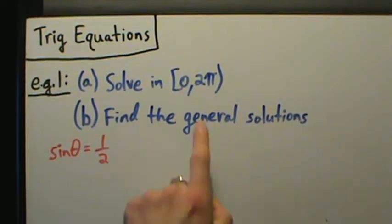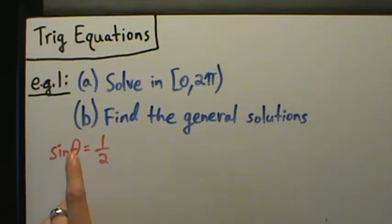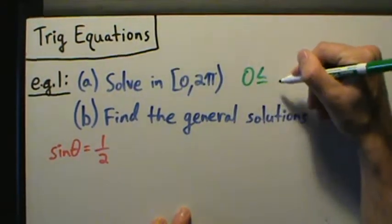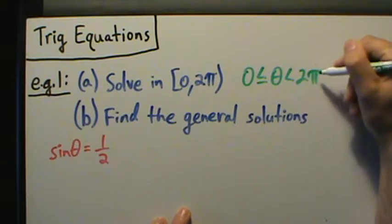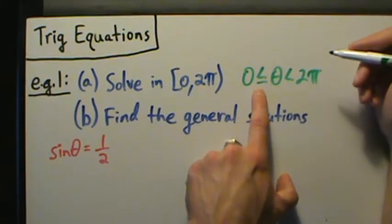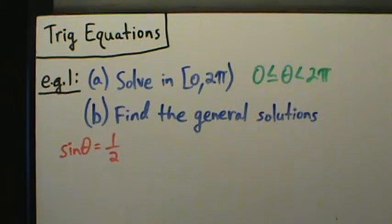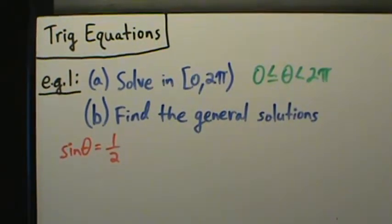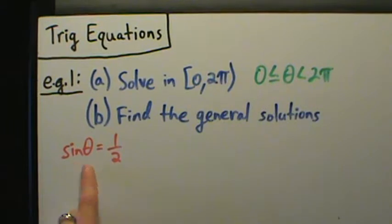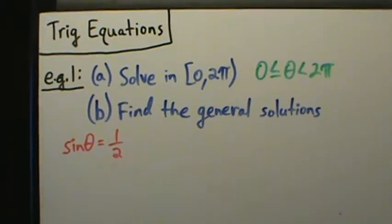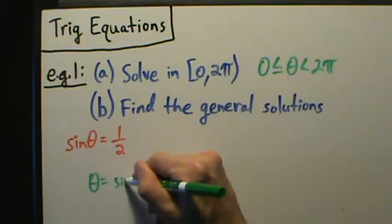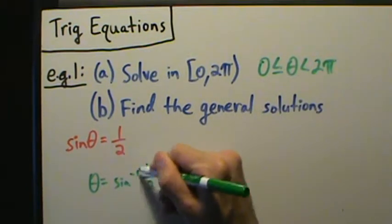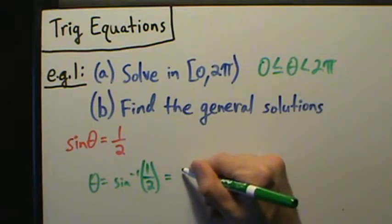In inequality notation, this interval means the values of theta we're looking for satisfy 0 ≤ θ < 2π — so theta is between 0 and 2π, could equal 0 but must be strictly less than 2π. Now, since sine of theta equals one half, you might be tempted to take the inverse sine of both sides, giving theta equals the inverse sine of one half, which from inverse trig is π/6.